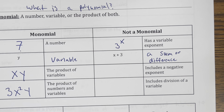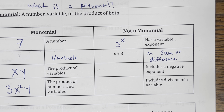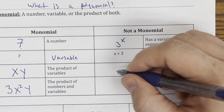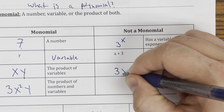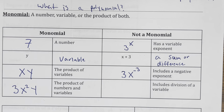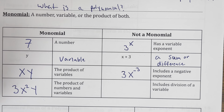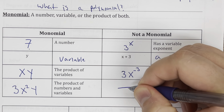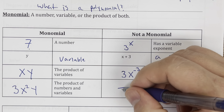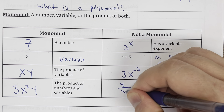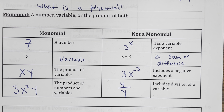Something that has a negative exponent is not a monomial. So something like 3x to the negative third would not be a monomial because that puts the variable in the denominator. And finally, if we have a term with a variable in the denominator — so something like 4 over y — that would not be a monomial because we're dividing by a variable.